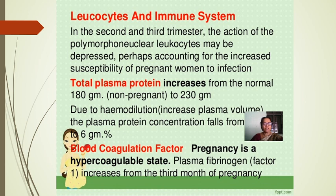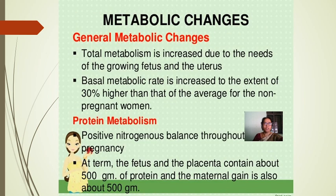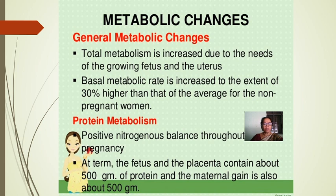Metabolic changes: general metabolic changes include increased total metabolism due to the needs of the growing fetus. The basal metabolic rate is increased by about 30% above the average for non-pregnant women. A positive nitrogen balance is maintained throughout pregnancy, and at term the fetus and placenta contain about 500 grams of protein, with a maternal gain also of about 500 grams.